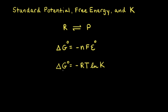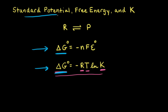Remember that ΔG° is connected to the equilibrium constant K by the equation ΔG° = −RT ln K, where R is the ideal gas constant and T is the temperature. Because ΔG° appears in both equations, they connect the standard potential E° to ΔG°, which is then connected to the equilibrium constant K.